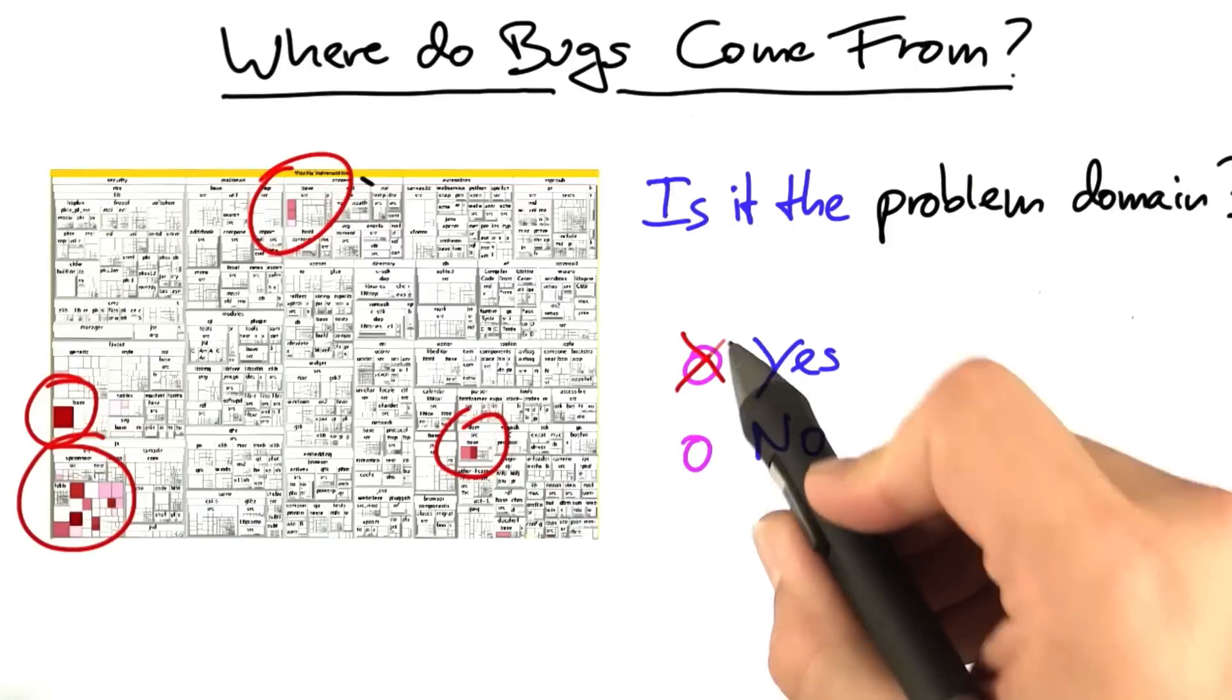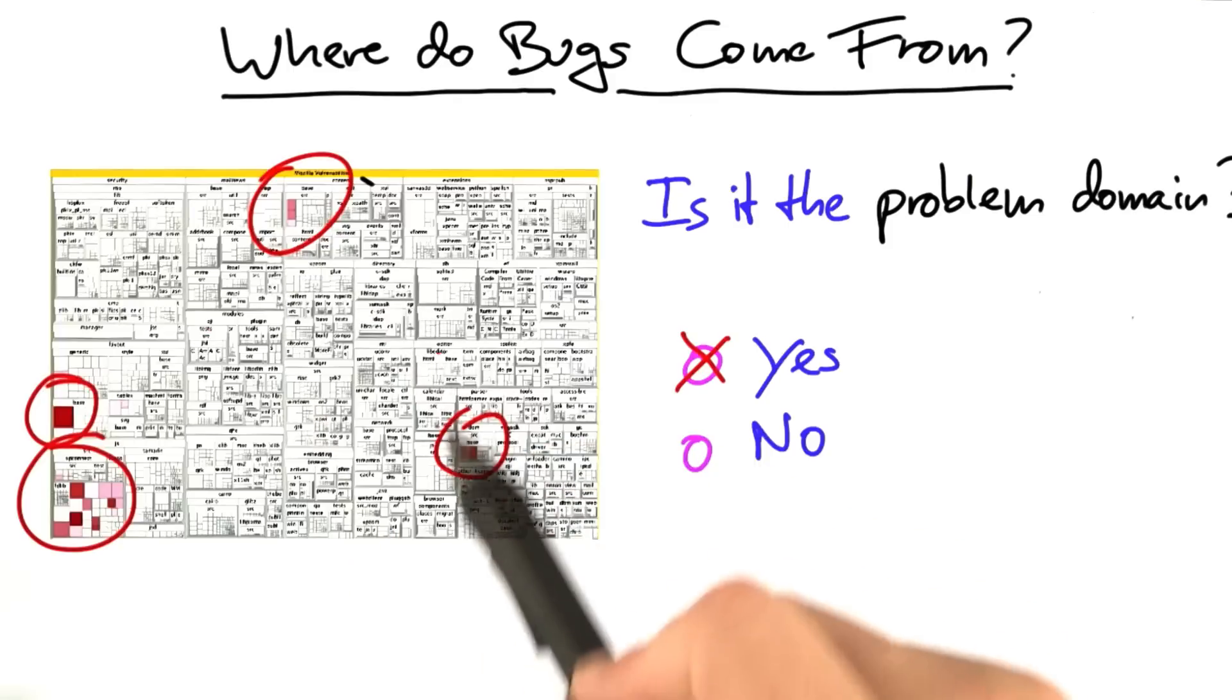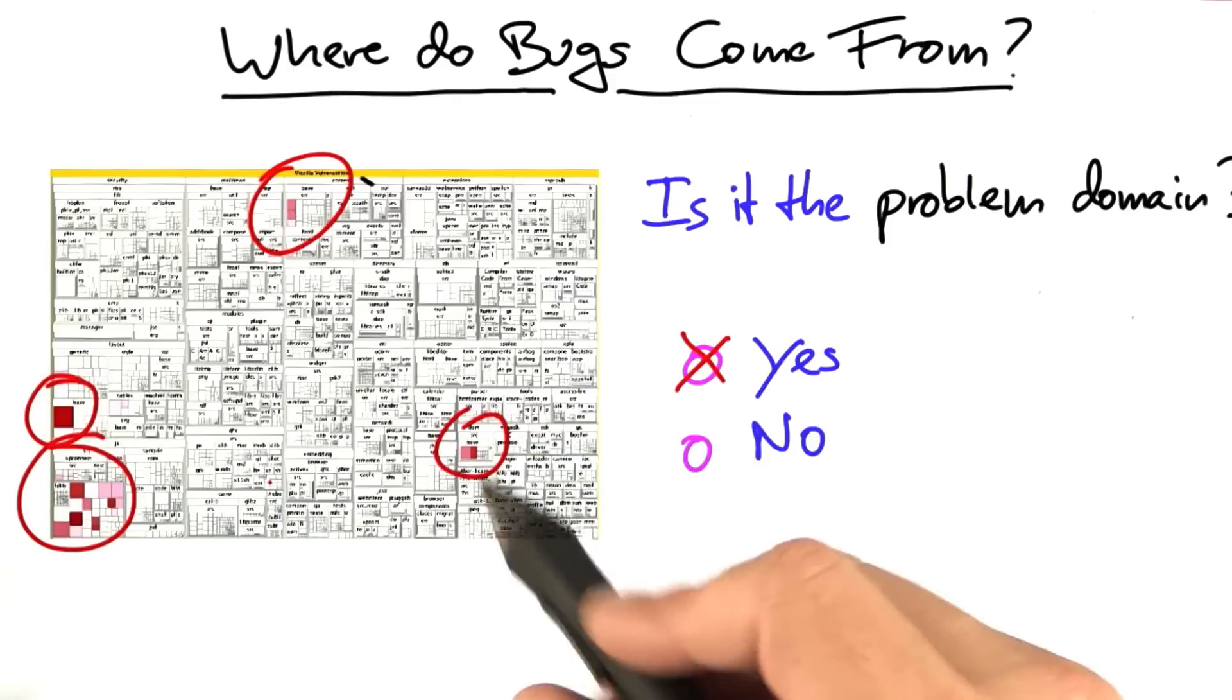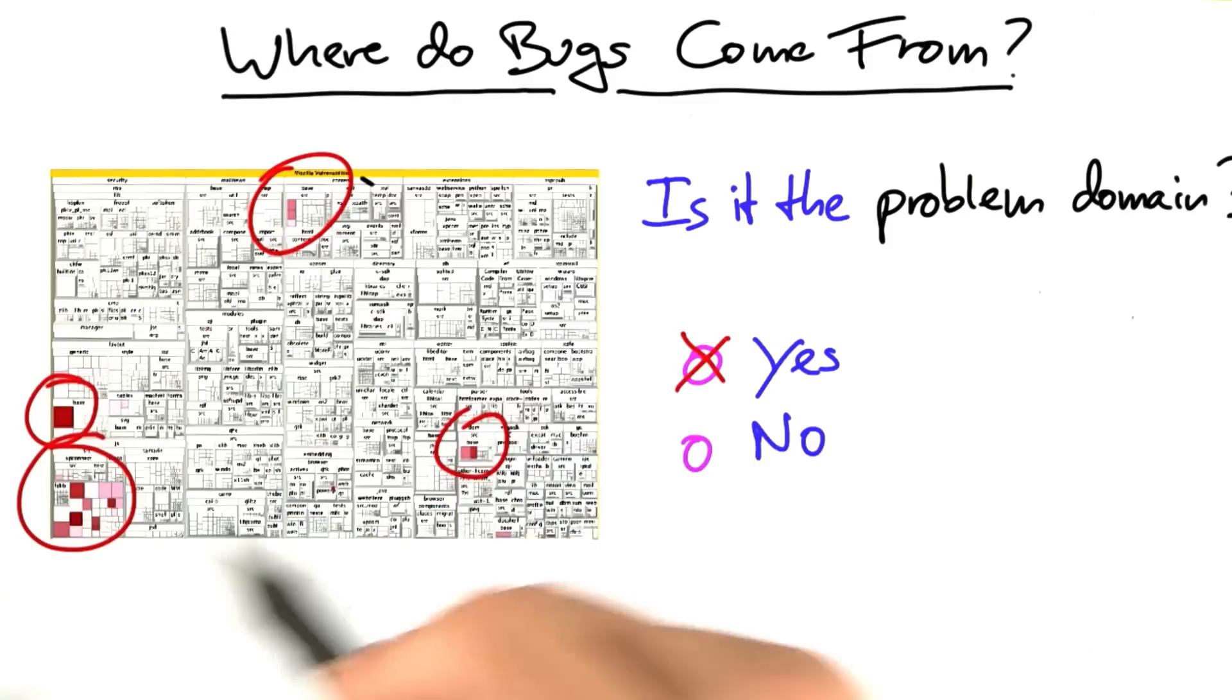The answer to that is a clear yes. In studies of Firefox and Eclipse, we found one specific feature of the code that dominated all others.